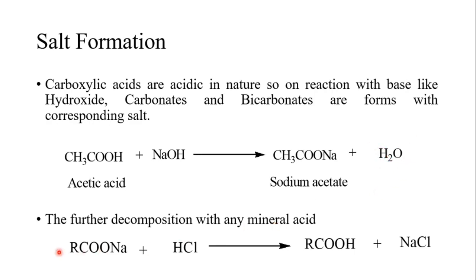For the decomposition with any mineral acid, we take a mineral acid. So one carboxylic salt, sodium acetate, plus HCl — HCl is a mineral acid — and both react to make one carboxylic acid. So NaCl is removed as a byproduct. Here Cl and Na are combined and removed, and H attaches back with the COOH group, giving one carboxylic acid and NaCl salt.